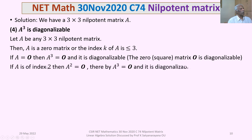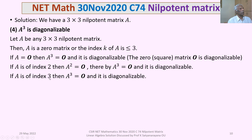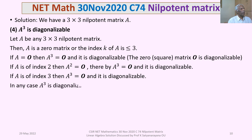The remaining possibility is that A is non-zero and of index 3, in which case A³ = 0 directly, so A³ is again the zero matrix and hence diagonalizable. In any case, for any 3×3 nilpotent matrix A, A³ = 0 and it is diagonalizable. Therefore option 4 is always true.